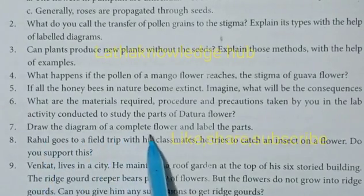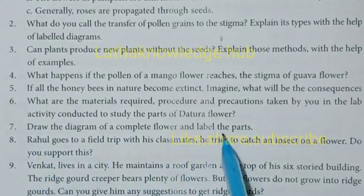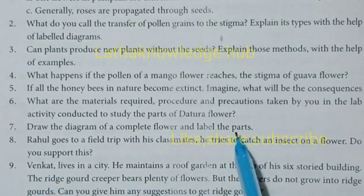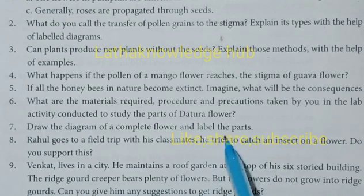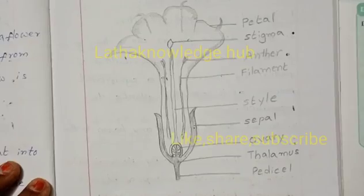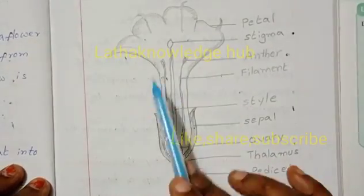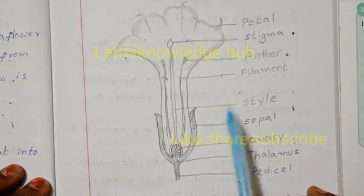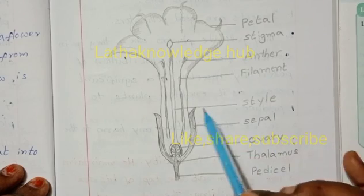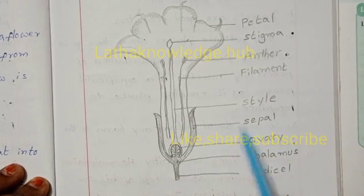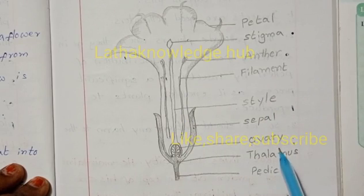Draw the diagram of a complete flower and label the parts. We discussed the parts of the Datura flower in the previous question, so we draw and label it here. The parts are: petal, stigma, anther, filament, style, sepal, ovary, thalamus, and pedicel.